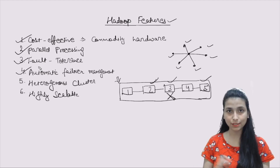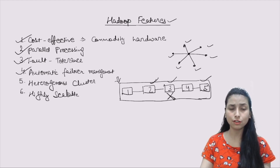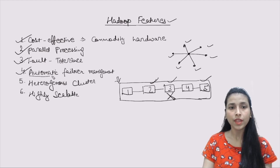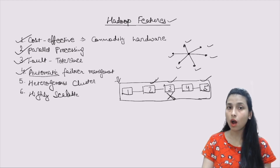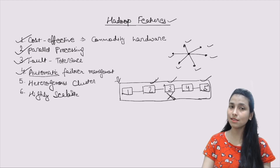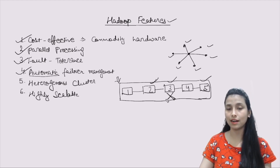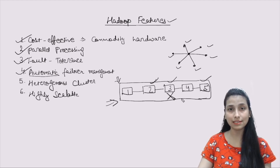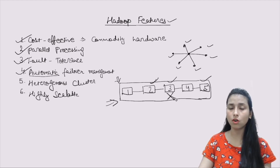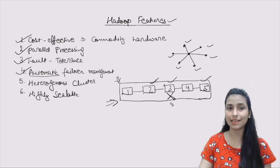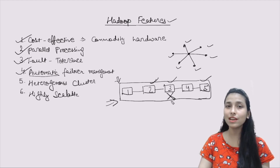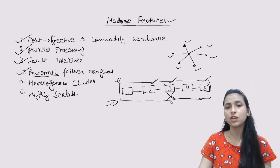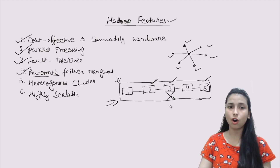Now let's discuss the 4th feature of Hadoop, which is called automatic failover management. By the name itself, it shows that Hadoop manages failover automatically. Let's take the same example — a cluster with 5 machines or 5 nodes. At any point of time, suppose the 3rd node crashes and some kind of failover occurs in that 3rd system.